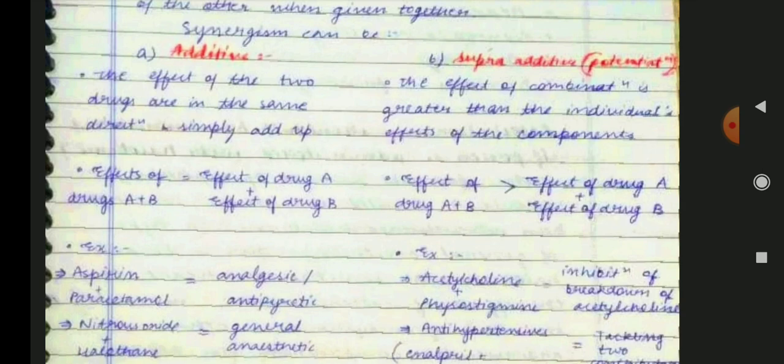Other additive synergism examples include amlodipine, a calcium channel blocker, and atenolol — both anti-hypertensive drugs. Aspirin and paracetamol together show antipyretic and pain-killing effects. These drugs when combined simply add up their effects equally — a one-plus-one equal effect.